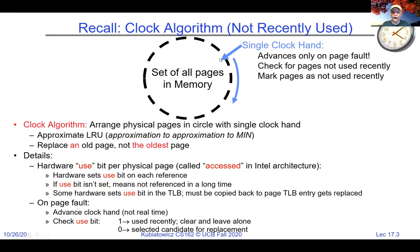If the use bit is a one, the page has been used recently; if it's a zero, it hasn't. We advance the hand and look at the use bit. If the use bit is zero, we assume it's an old page and go ahead and reuse it. If it's a one, we know it's been used recently — we set that use bit to zero and go on to the next one. We keep repeating until we find one where the use bit is zero. If we see a one, it means the page has been used since the last time we came around the loop. This is not LRU, but it divides pages into two categories: recent pages and older pages, and we pick an old page.